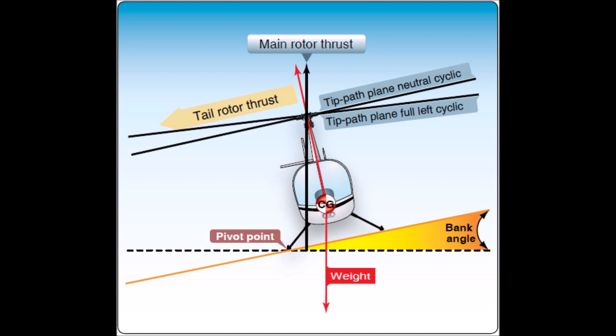Once started, dynamic rollover cannot be stopped by the application of opposite cyclic control alone. For example, the left skid contacts an object and becomes the pivot point. While the helicopter starts rolling to the left, even with full right cyclic applied, the main rotor thrust and its moment follows the aircraft as it continues rolling to the left.